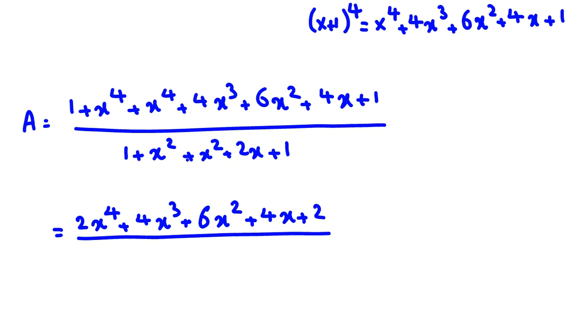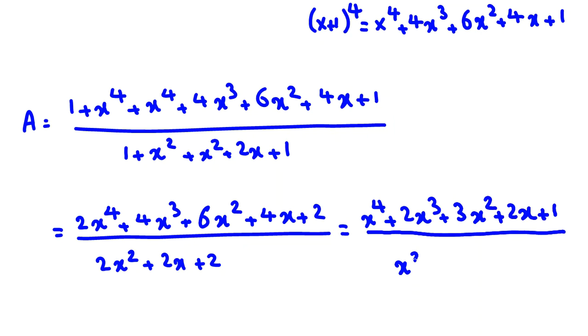All over x squared, x squared, 2x squared plus 2x plus 1 plus 1 plus 2. We divide by 2 both numerator and denominator. It will be x to the 4 plus 2x cubed plus 3x squared plus 2x plus 1, and then we divide by x squared plus x plus 1.